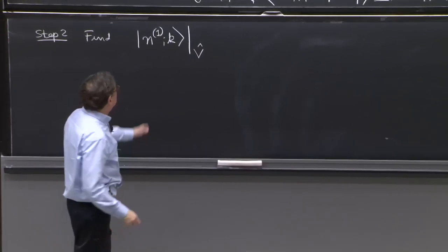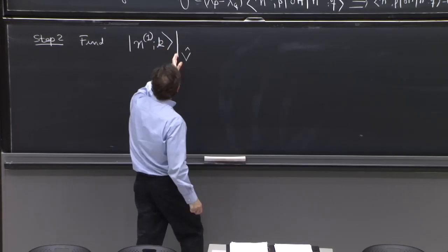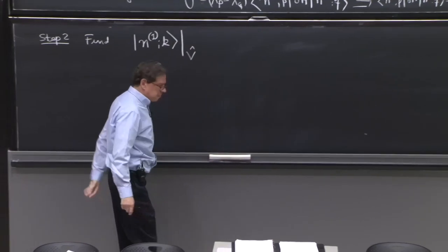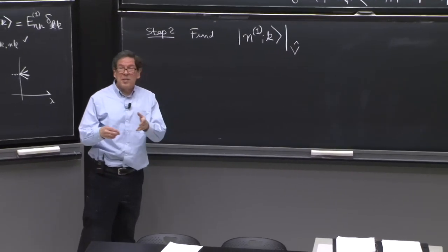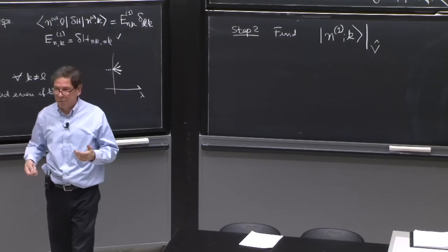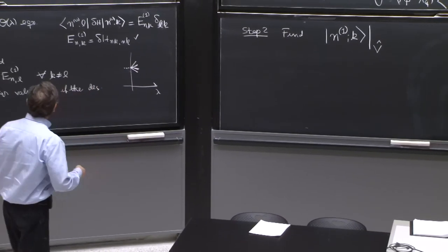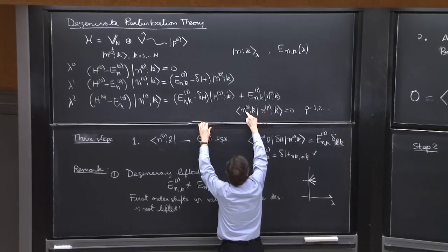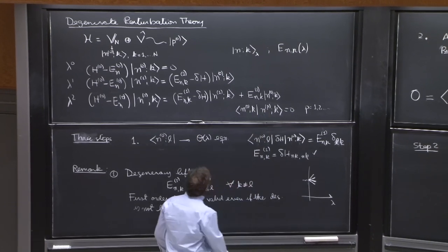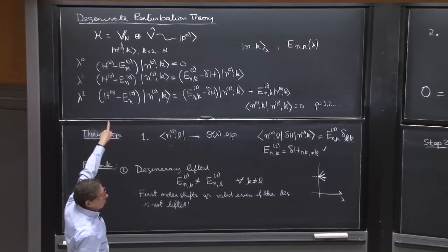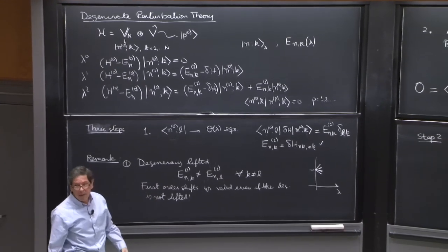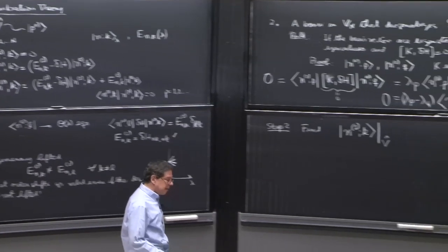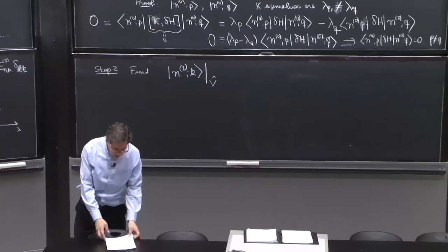I will use this notation — a bar — saying, of this vector, the piece in that subspace. Then we need to find the piece in the degenerate subspace. Remember, the corrections are orthogonal to the original state, but the corrections can have a piece on vN. The vN has more states, so it can have a piece on vN, and that's typically the part that is a little hard to do.